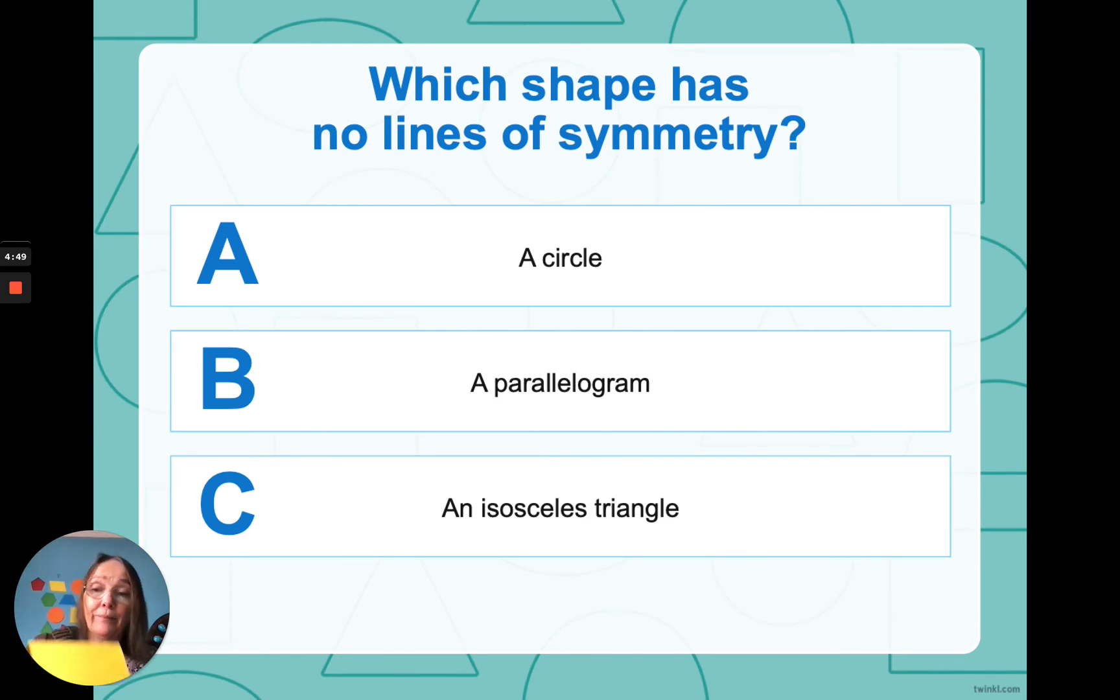So, a parallelogram. That's a parallelogram. As you can see, it's a bit like a squashed rectangle, but it does not have any 90-degree angles. It hasn't got any square corners.